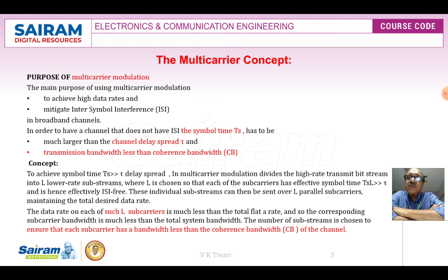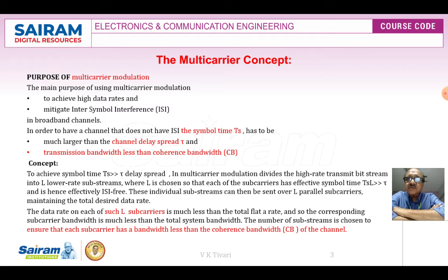The symbol time TS should be far far greater than the delay spread. Multi-carrier modulation divides the high-rate bit stream into L lower-rate sub-streams, where L is chosen so that the effective symbol time TS multiplied by L is far greater than the delay spread. Hence, effectively this will be ISI-free. These individual sub-streams are sent over L parallel sub-carriers, each with bandwidth much less than the total system bandwidth, ensuring each subcarrier bandwidth is less than the coherent bandwidth CB of the channel.